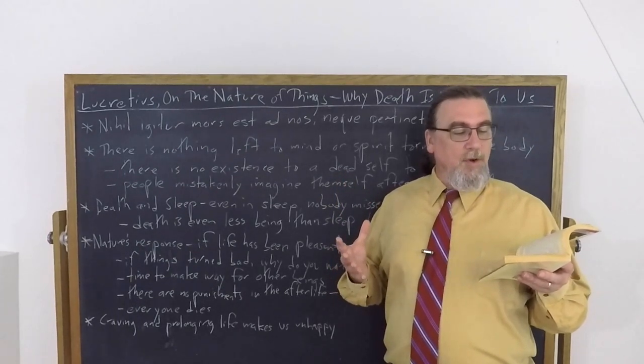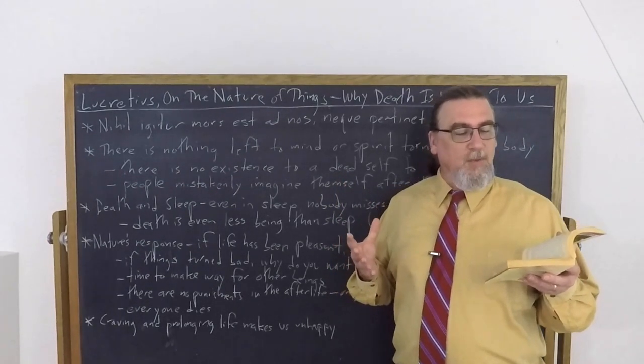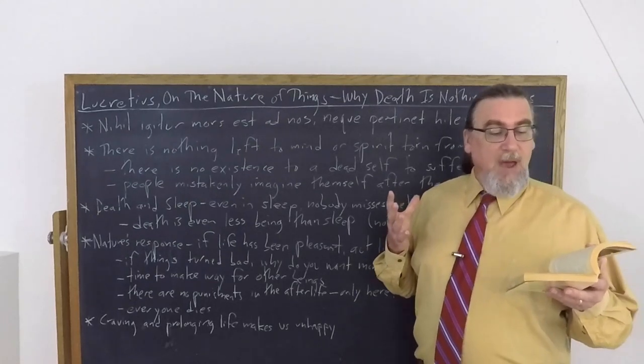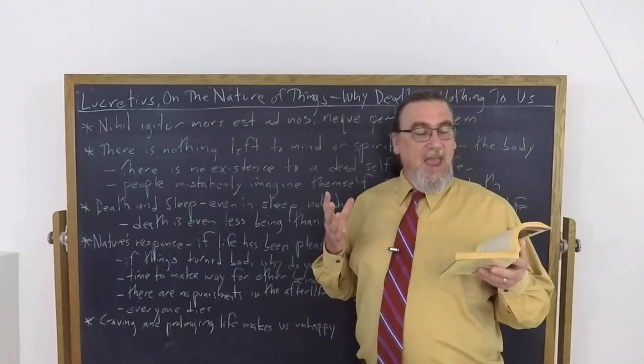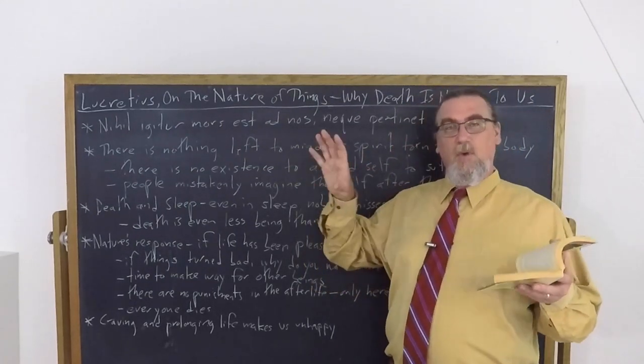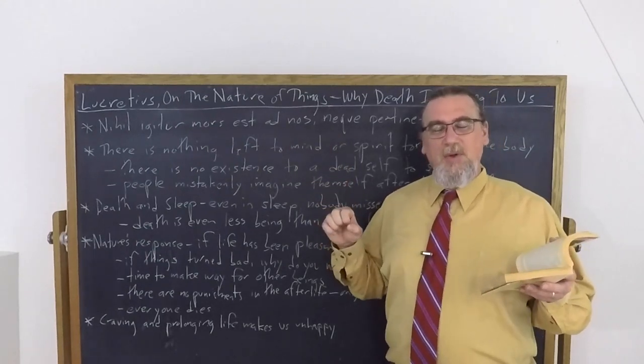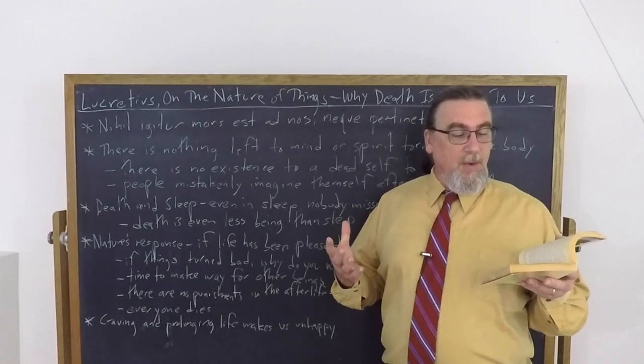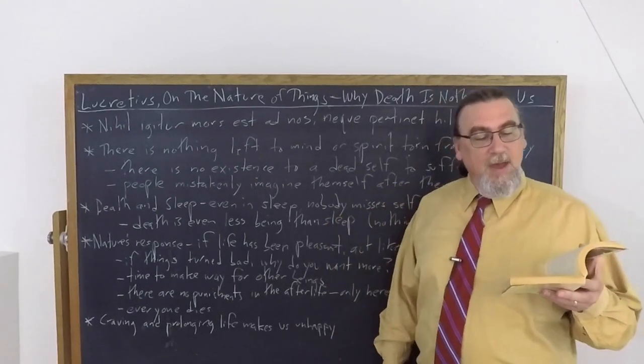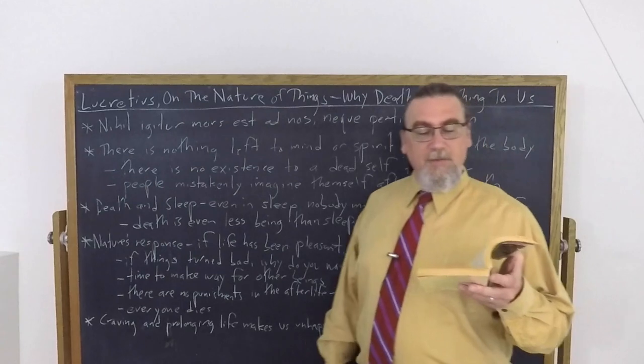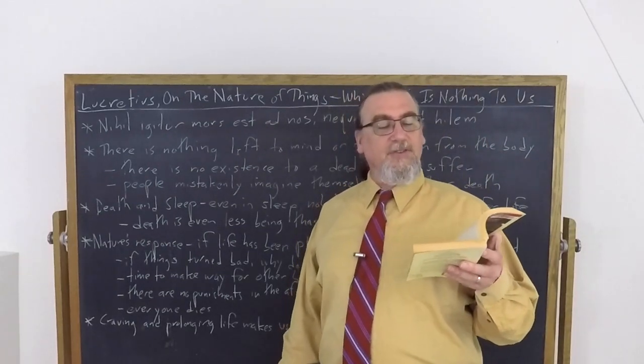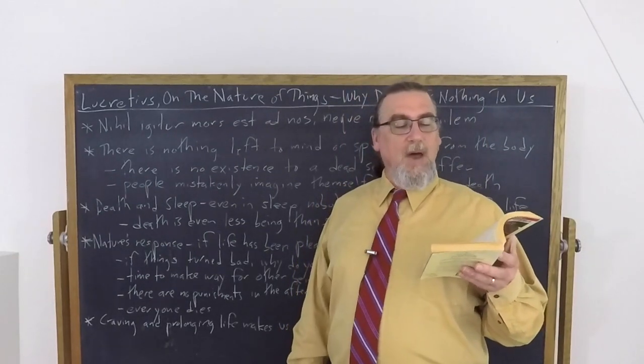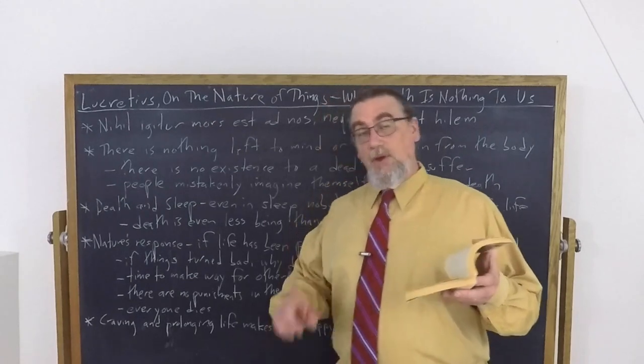Democritus, when ripe age warned him the mindful motions of his intellect were running down, made his unbowed head a willing sacrifice to death. And the master himself, of course, the master of Lucretius's school. When his daylight race was run, Epicurus himself died, whose genius outshone the race of men and dimmed them all as the stars are dimmed by the rising of the fiery sun. And so here's the payoff.